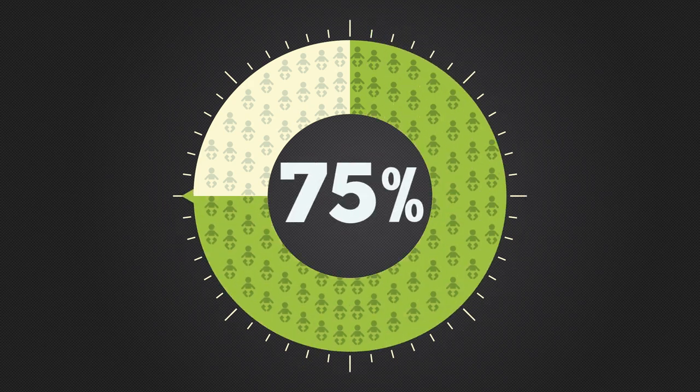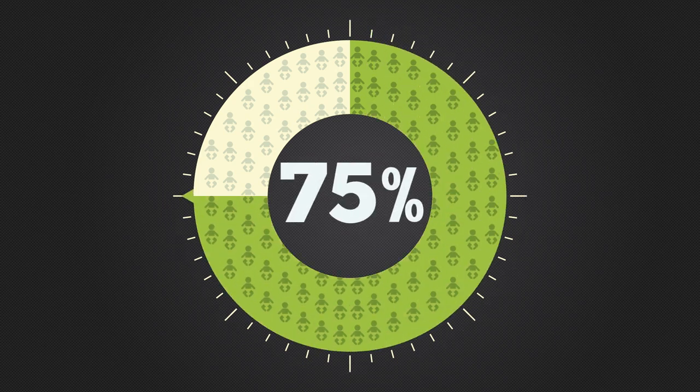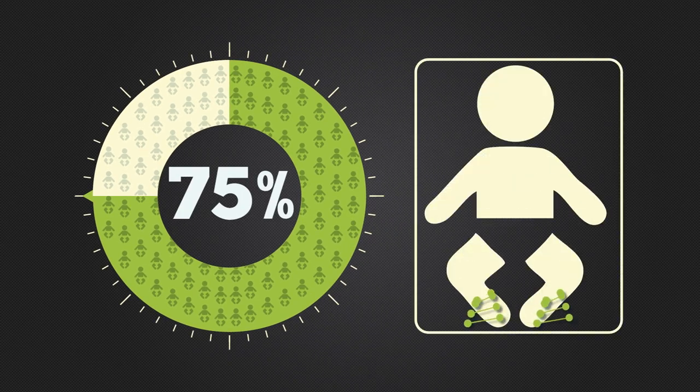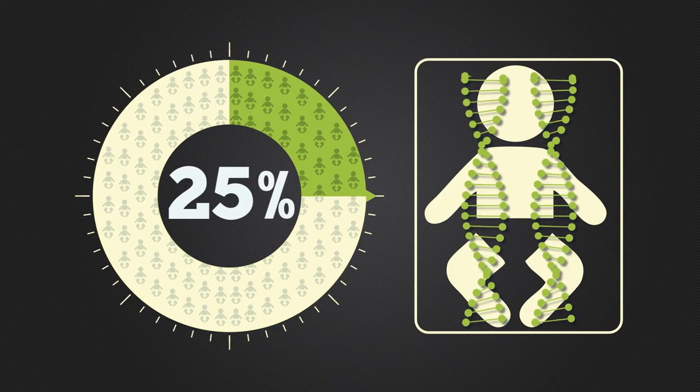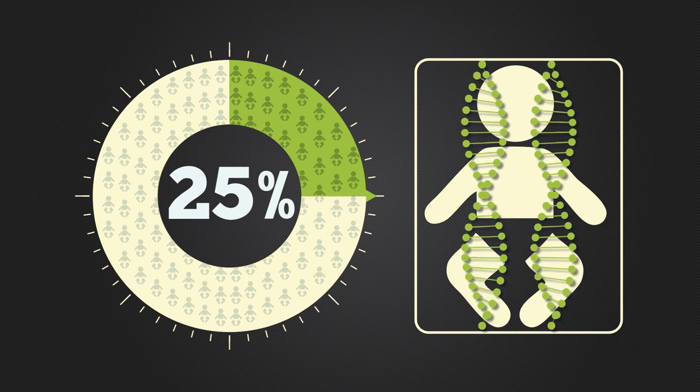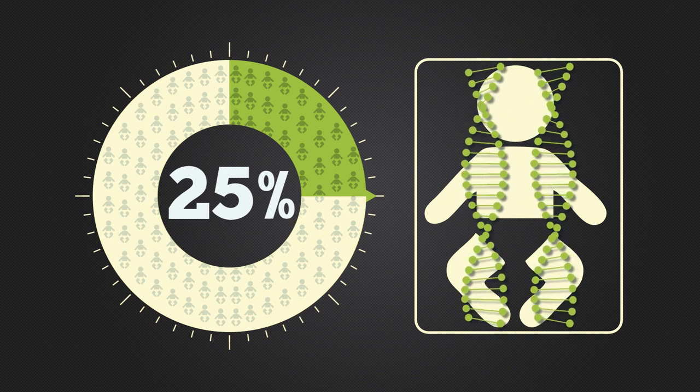When two carrier parents conceive a child, there is a 75% chance the child will be healthy and unaffected by the disease, which includes a 25% chance of having an unaffected child with two healthy copies of the gene.